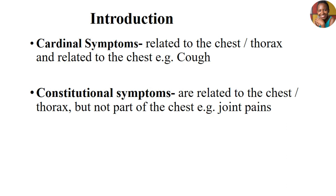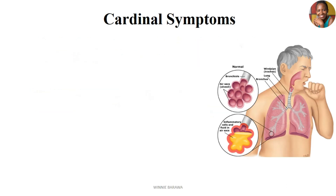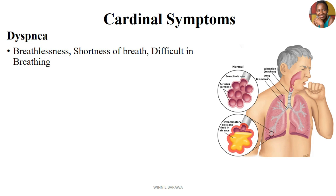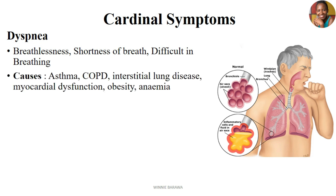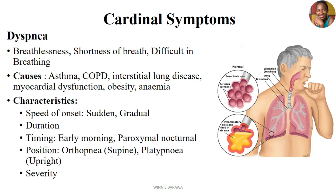I want to start with the cardinal symptoms. Other books refer to them as breathlessness, shortness of breath, or difficulty in breathing — all allowed names you can use in place of dyspnea. Dyspnea can be associated with conditions such as asthma, COPD (chronic obstructive pulmonary disease), interstitial lung diseases, myocardial dysfunction, obesity, and anemia. We are told to look at dyspnea in different arenas — you can look at it based on the speed of onset: sudden, gradual, or intermittent, as each will display different conditions.